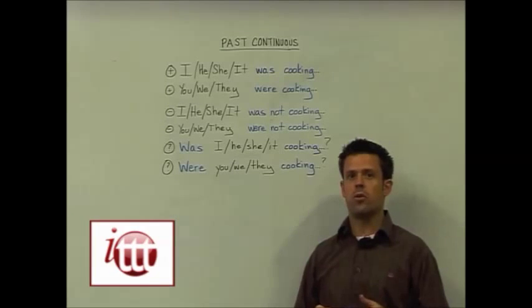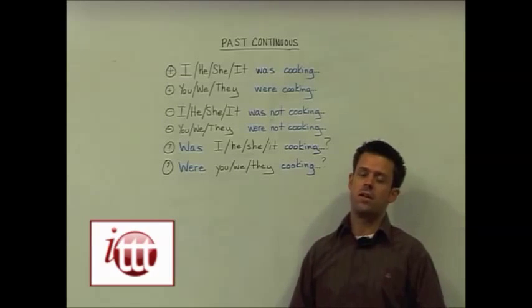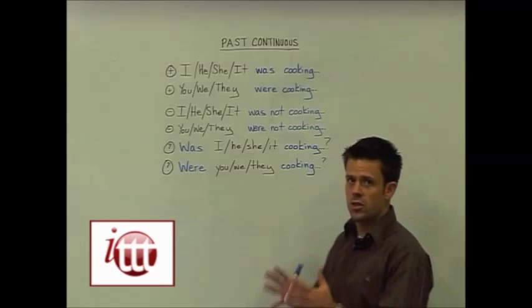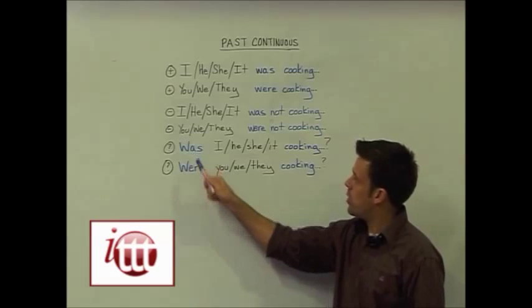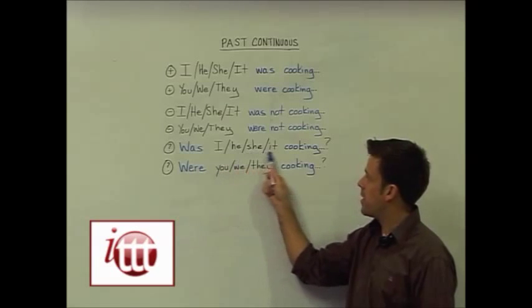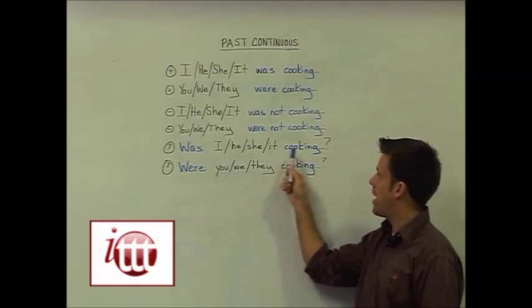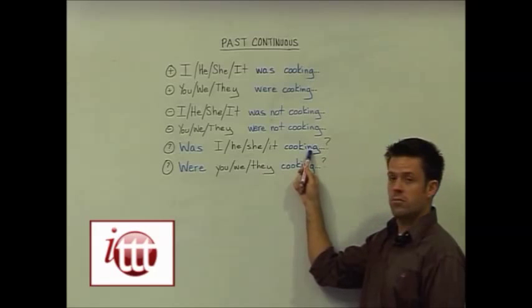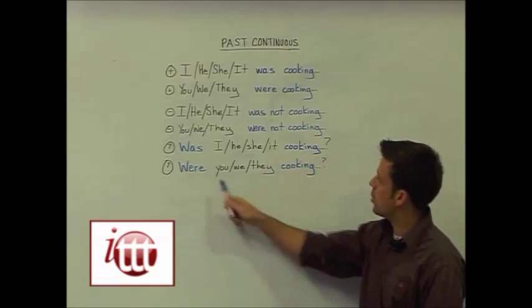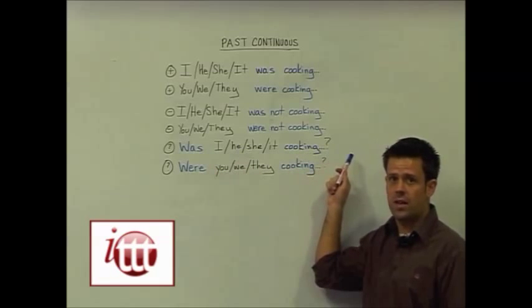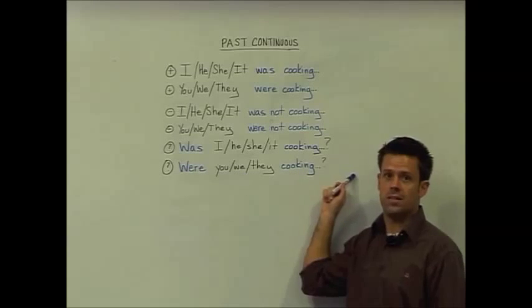In order to form the question for the past continuous tense, again we're going to invert our subject and our helping verb. So we start our question with was or were, depending on our subjects, and we keep our present participle form of the verb, which is our main verb in the question. So was he cooking last night, or were you cooking last night?